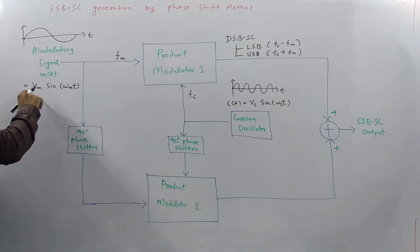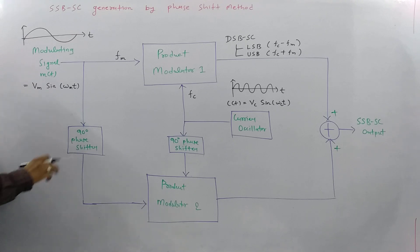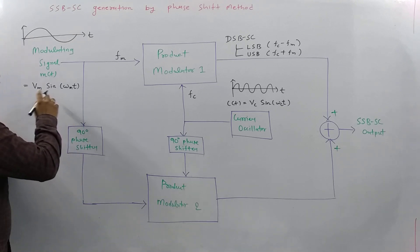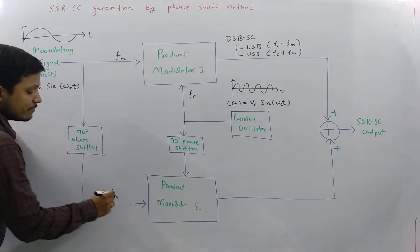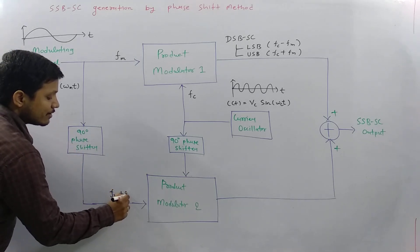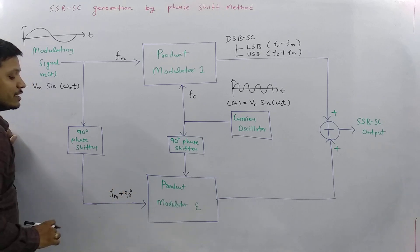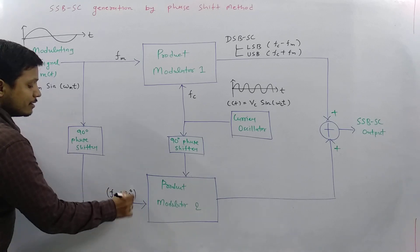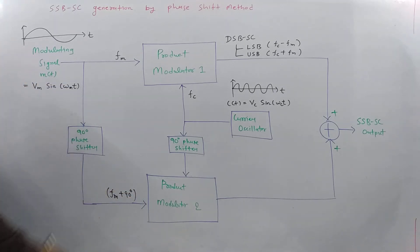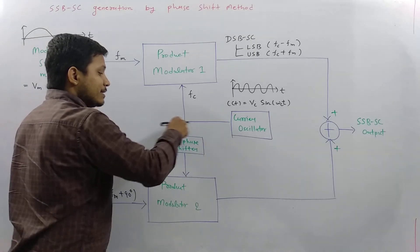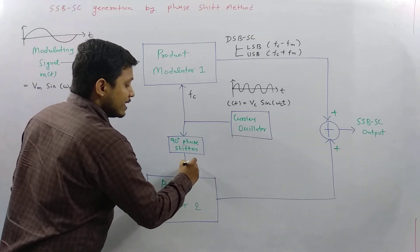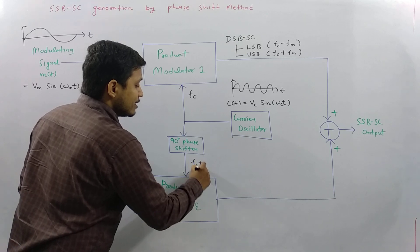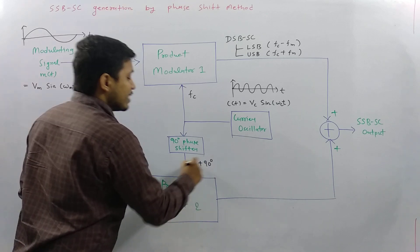The modulating signal is also given to a 90 degree phase shifter, so the modulating signal Fm with 90 degree phase shift is fed into product modulator 2. Similarly, the carrier signal is also given a 90 degree phase shift, so the carrier signal entering product modulator 2 is Fc plus 90 degrees.